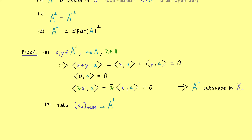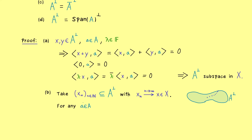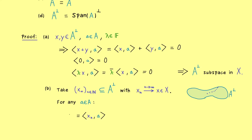We call this limit lowercase x and we don't know if it lies in A-perp as well. If we can show it always lies in A-perp, then we are done — because if we cannot leave the set with a sequence, we have a closed set. We take any a in A and consider the inner product of xₙ with a. We know this is always zero because xₙ lies in the orthogonal complement of A. This is a sequence of complex numbers whose value is always zero regardless of n, so the limit of this sequence is definitely also zero.